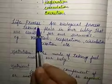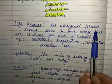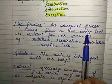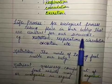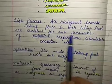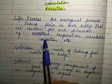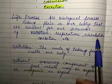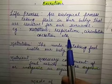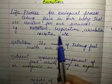Life process. What is life process? All biological processes taking place in our body that are essential for our survival are called life processes. For example, nutrition, respiration, circulation, excretion, growth, etc. You all are aware with these terms.